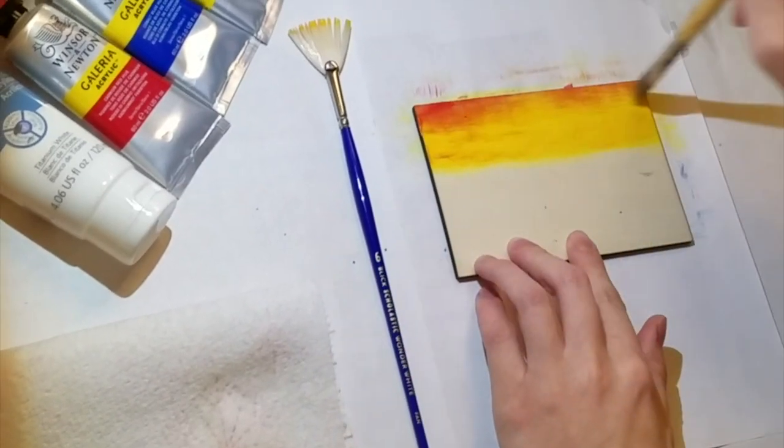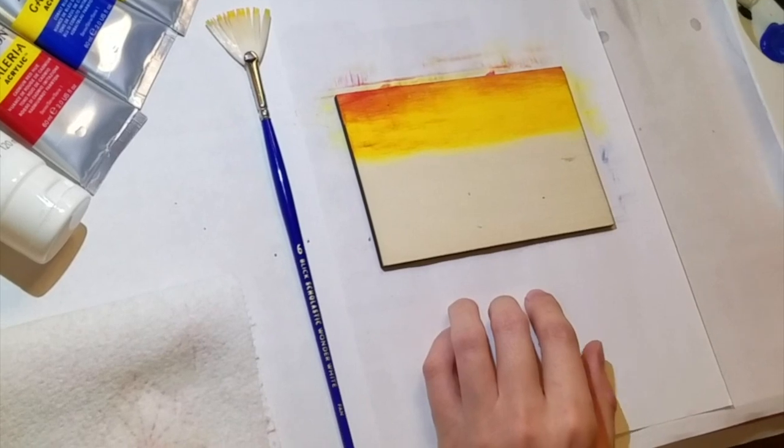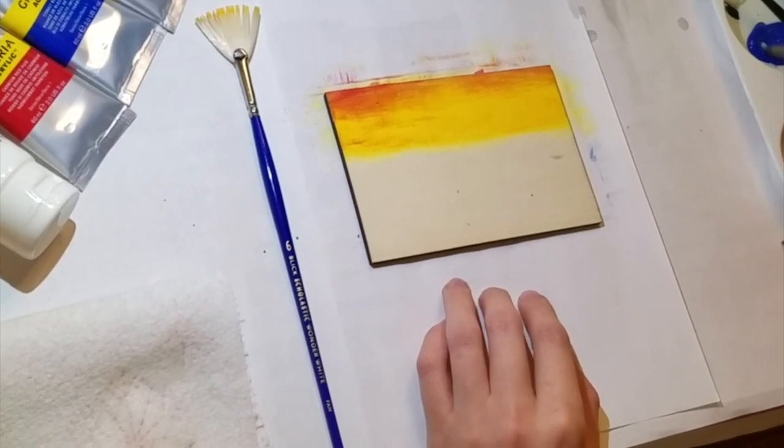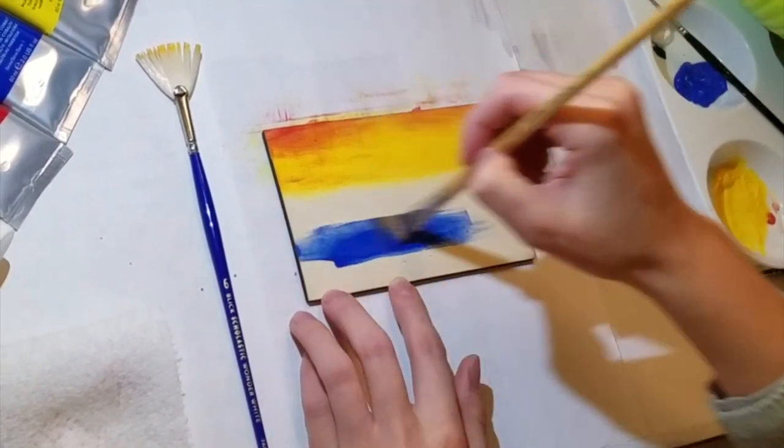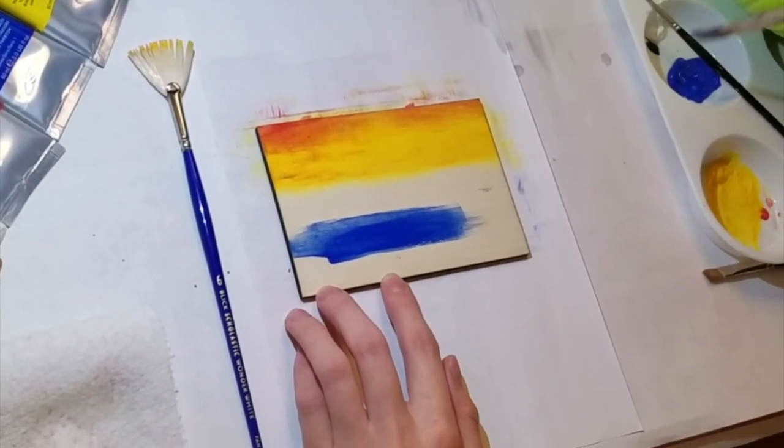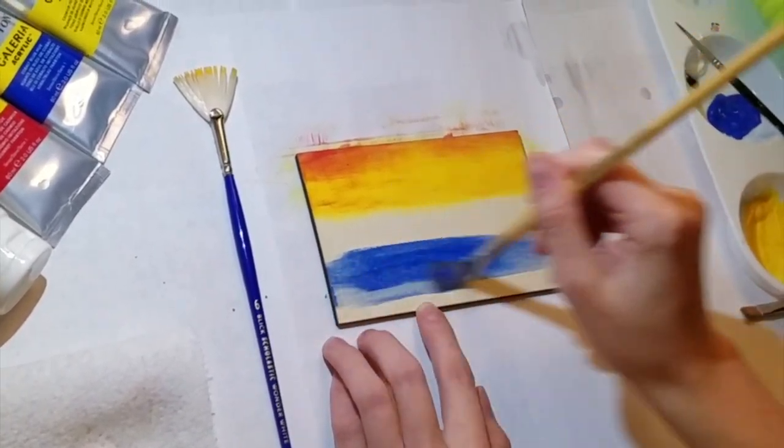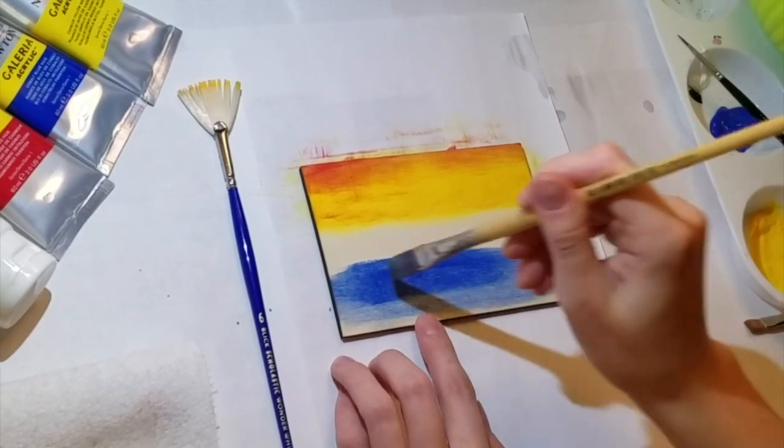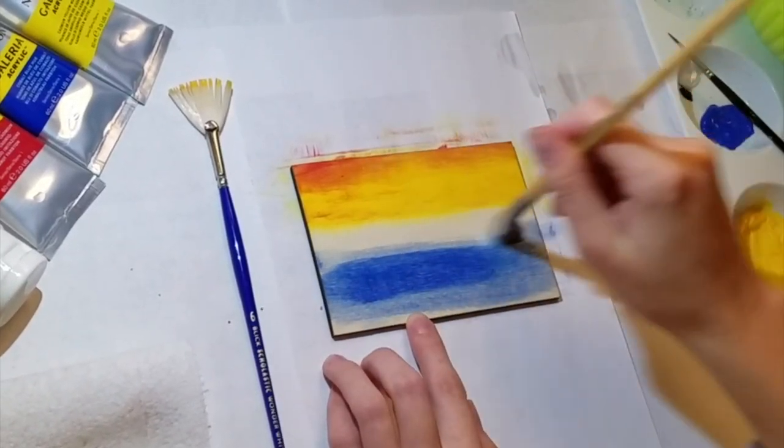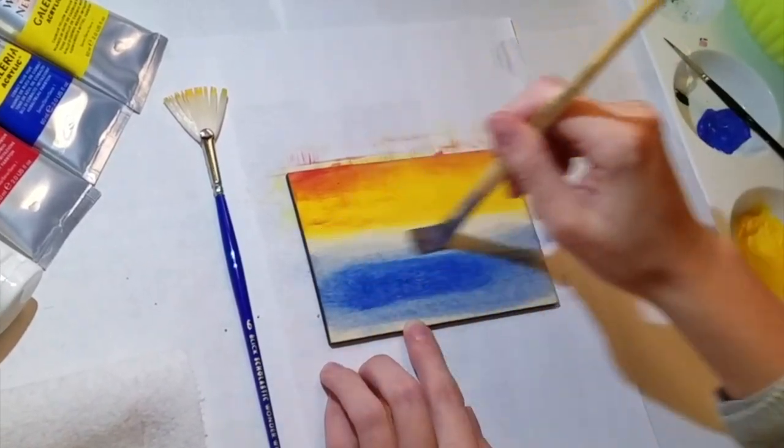Okay, so now that we have the edge blended, I then went in again using a decent amount of water for the blue. I really wanted to keep this very transparent, again, so that I could see the grain underneath, but also because I use the same blue without darkening it with another paint color on top.